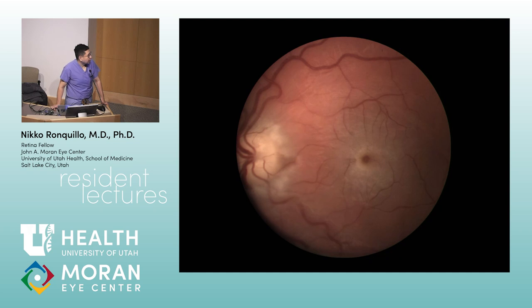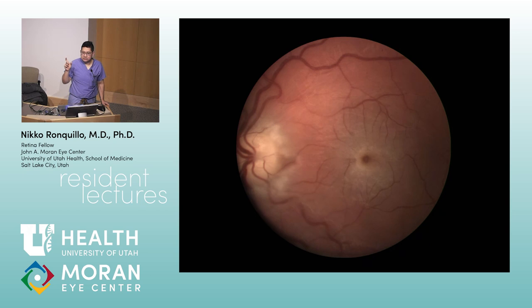Next — CRAO with cherry red spot. Other causes of cherry red spot include Tay-Sachs, Niemann-Pick, and similar storage diseases. You get macula sparing from the cilioretinal artery in some cases. High yield anatomy: the macula is 5.5 millimeters total diameter.